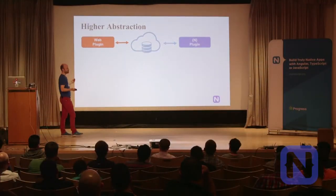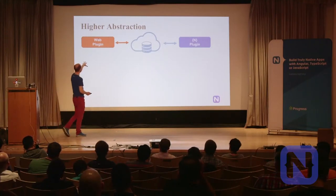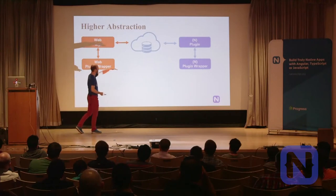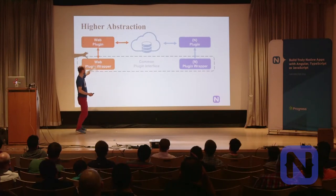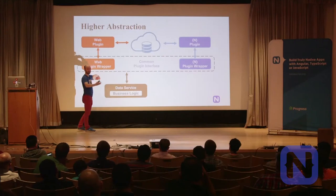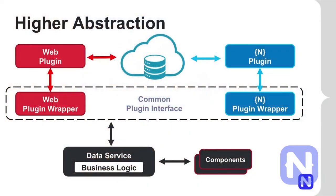The other way is higher abstraction — for suicidal people like me. You create two wrappers: a web plugin wrapper and a native plugin wrapper, both with a common interface. Then you have a data service with the business logic that talks to the common layer of the wrapper. This approach is great for reusability — if you use these plugins for talking to cloud data across multiple projects, you can reuse the wrapper everywhere.